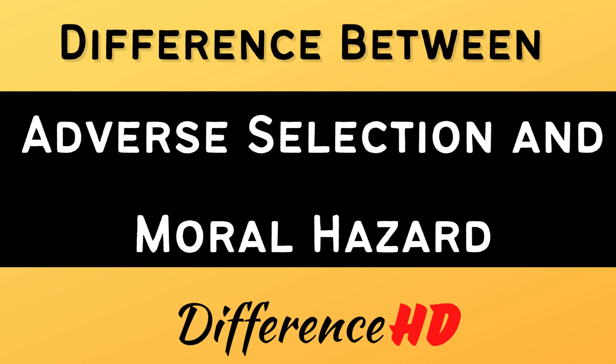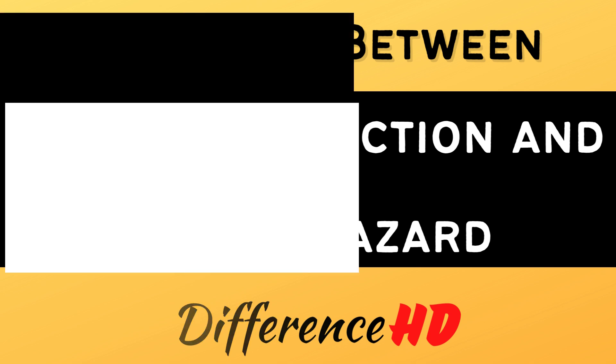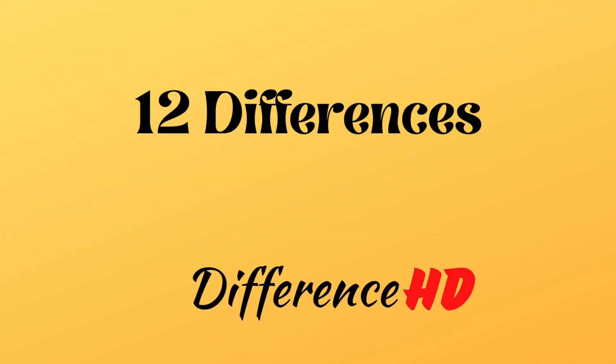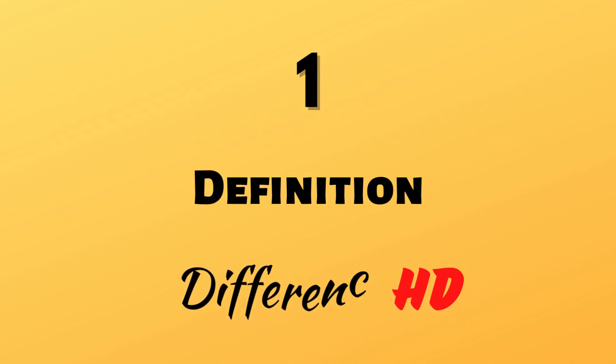In this video, we will explore the key differences between adverse selection and moral hazard, and discuss how they can affect the performance of markets and the behavior of individuals and organizations. 1. Definition: Adverse selection refers to the situation where buyers and sellers have asymmetric information, while moral hazard refers to the situation where one party is insulated from the risks and consequences of their actions.